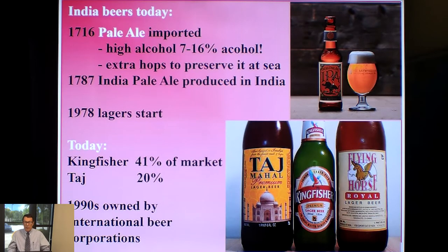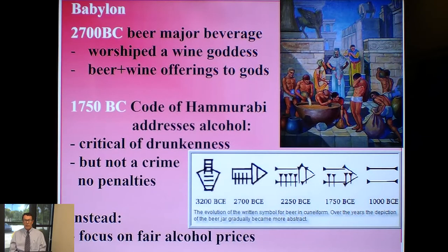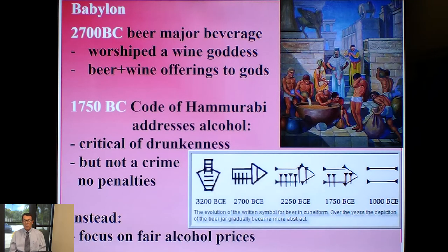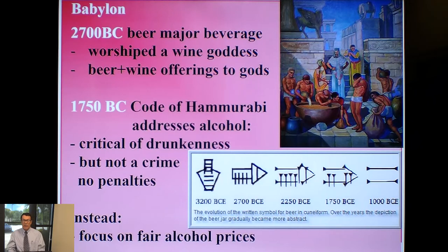These Indian brands have largely been taken over by giant international beer brands. In the Middle East, the Babylonians used beer and wine for worship and offered them to the gods. The excessive use of alcohol has always been a problem, and the earliest known law code — written by King Hammurabi, surviving on a stela in the Louvre Museum in Paris — addresses alcohol. He criticized drunkenness but applied no penalty to habitual drunkards, instead trying to control consumption by raising prices and increasing taxes.